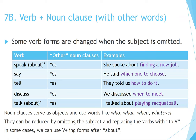Section 7b: Verb plus noun clause with other words — some verb forms are changed when the subject is omitted. Speak about — yes: She spoke about finding a new job. Say — yes: He said which one to choose. Tell — yes: They told us how to do it. Discuss — yes: We discussed when to meet. Talk about — yes: I talked about playing racquetball. Noun clauses can be reduced by omitting the subject and replacing verbs with 'to plus verb.' In some cases, we can use verb plus -ing forms after 'about.'